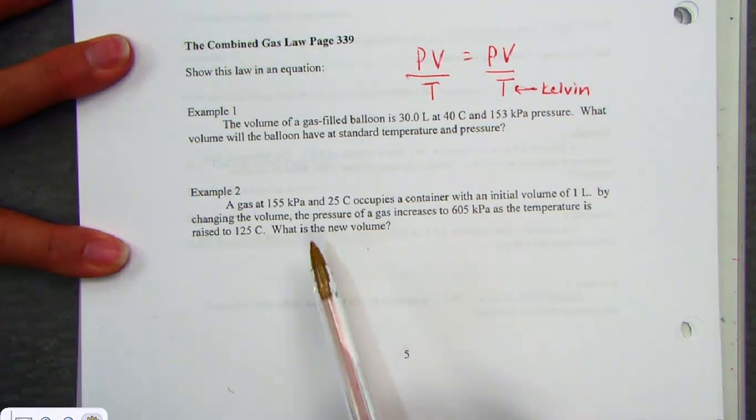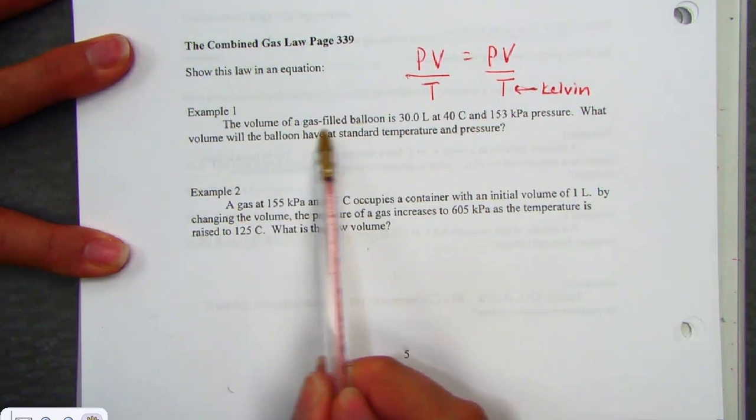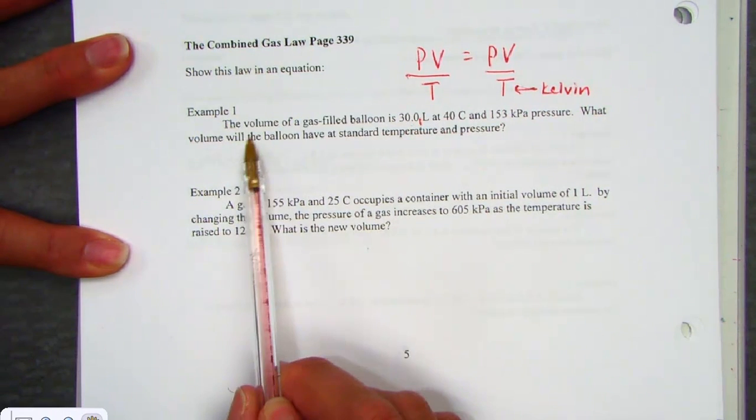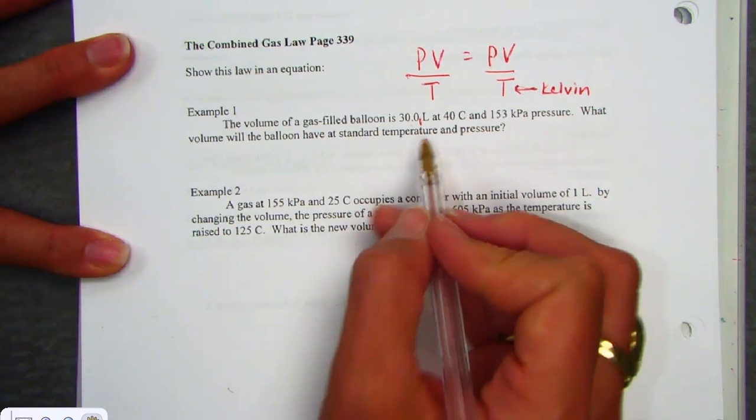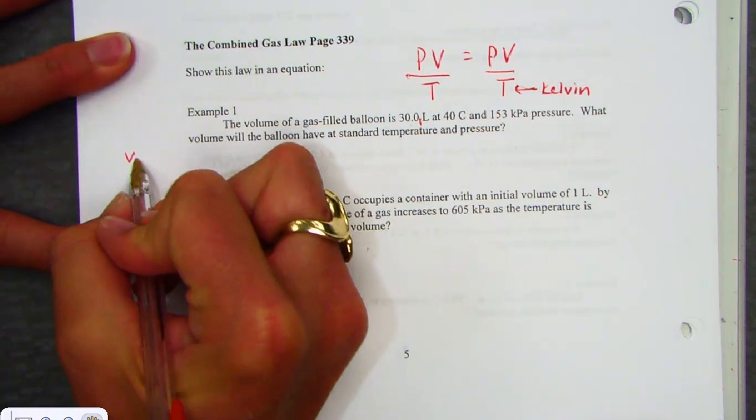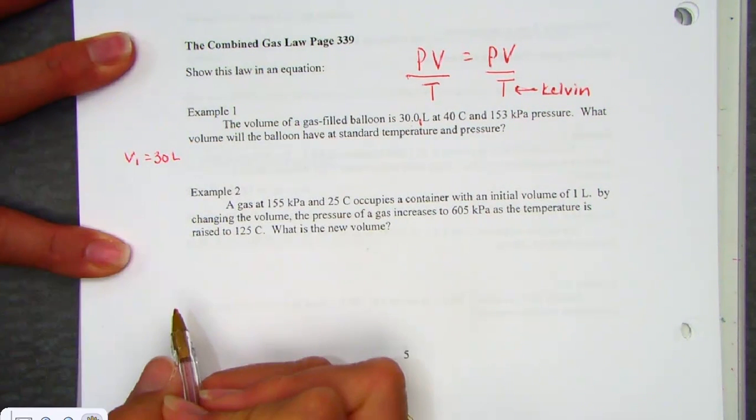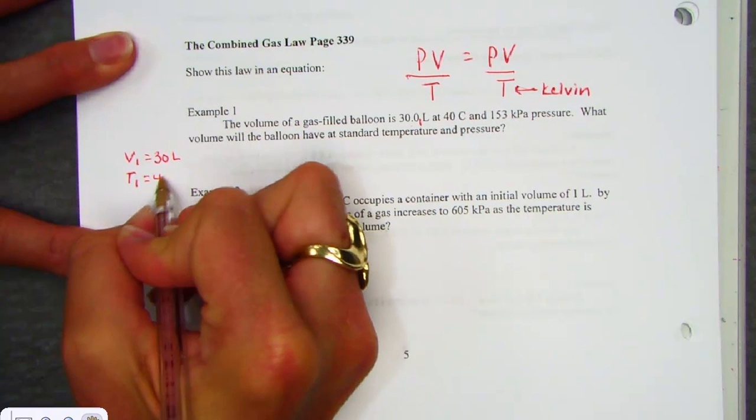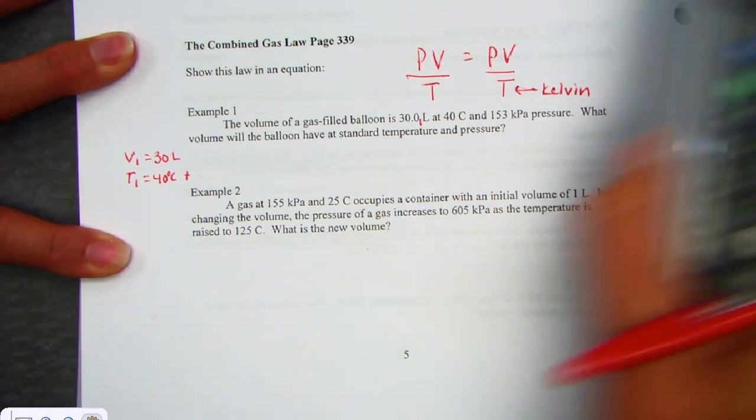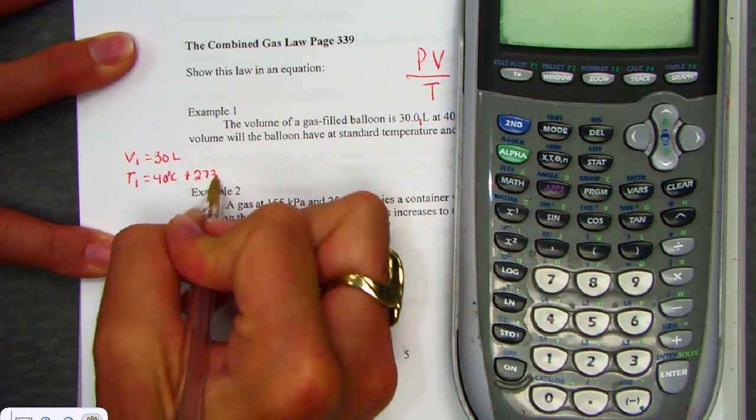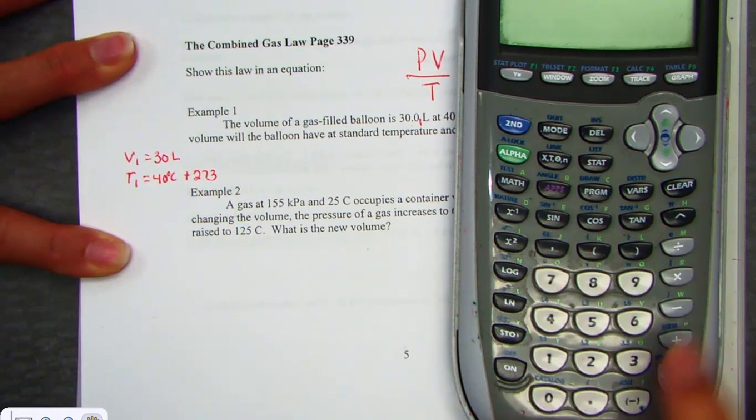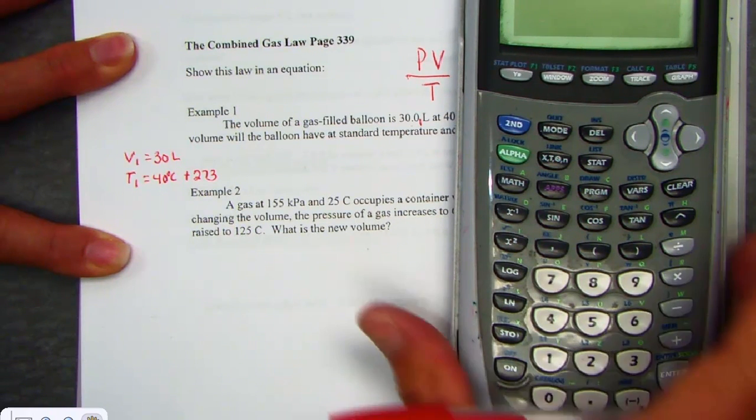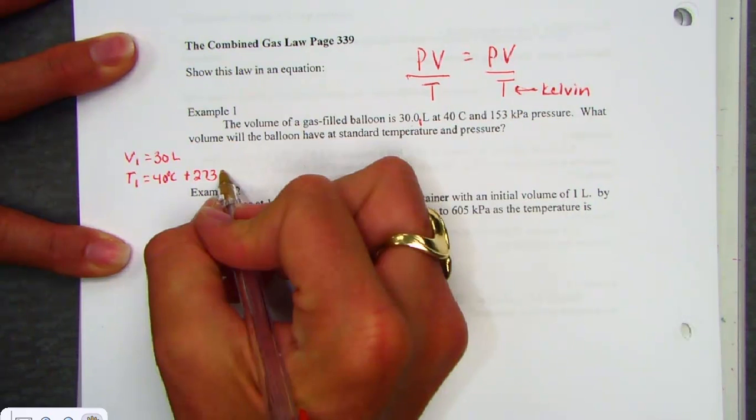When we look at our first example, as I read through, every time I see a number, I start to assign it a variable. It says we have a volume of a gas-filled balloon, and the volume is 30 liters. So I'm going to call that my V1, 30 liters. Its temperature is 40 degrees Celsius, but I know I won't be able to use that, so I'm going to add 273 and convert that right now into a Kelvin unit. So my 40 adding 273 gives me a 313 Kelvin unit.